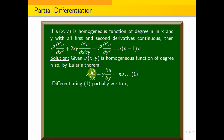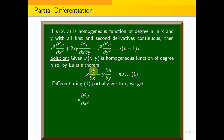Since u is a function of x and y, we apply the product rule. Differentiating x·∂u/∂x with respect to x gives ∂u/∂x plus x·∂²u/∂x², and differentiating y·∂u/∂y with respect to x gives y·∂²u/∂x∂y.